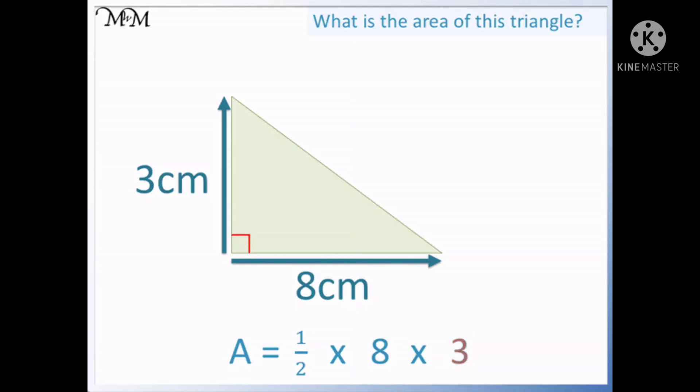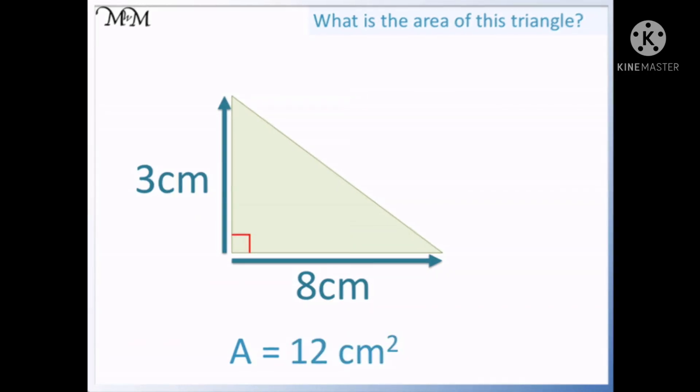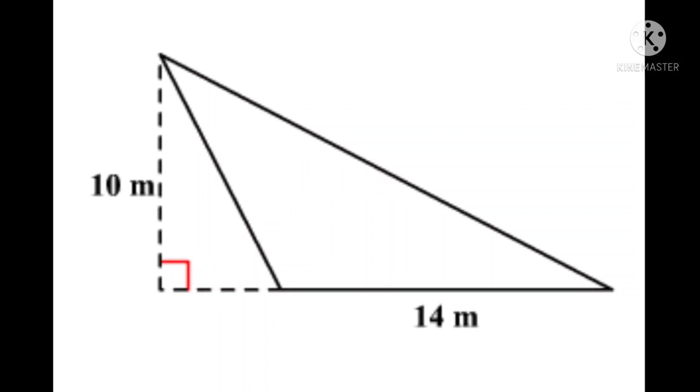So we can see the answer to this question is four multiply by three. Half multiplied by eight leads to four, and four multiplied by three equals twelve centimeter square. So guys, remember to always put the square sign after centimeter when doing the area formula.